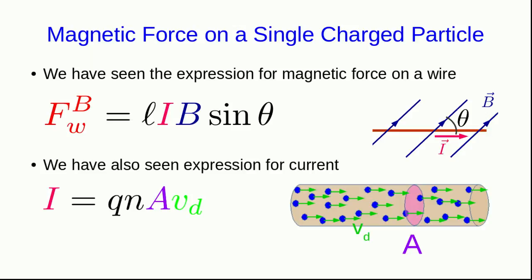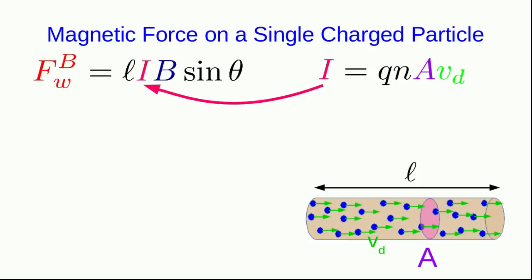Since we know how to write the current in terms of other things, this will allow us to do this. And I'll just remind you that in this expression for the current, the q is representing the charge per charge carrier. So if these are electrons, then that q would be negative e, and that little n is the charge carrier density.